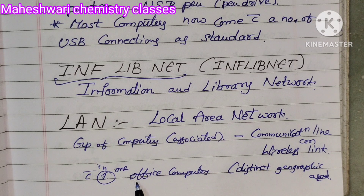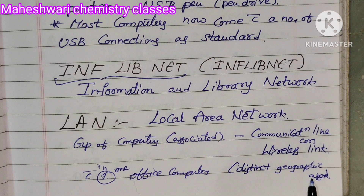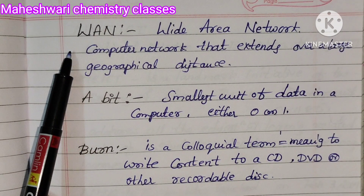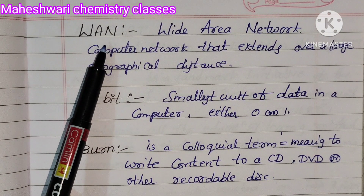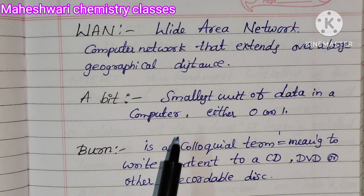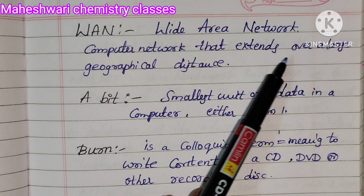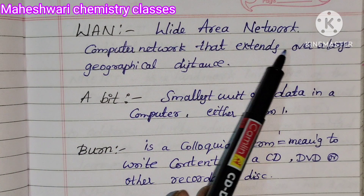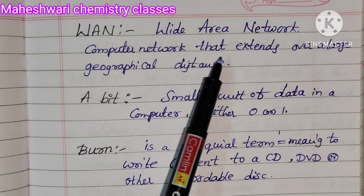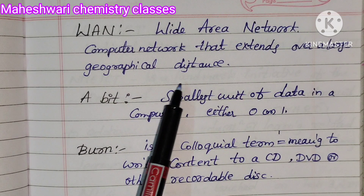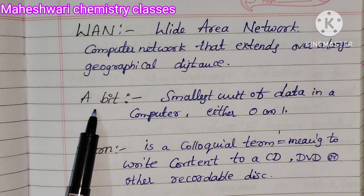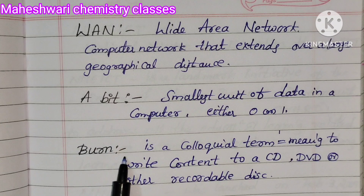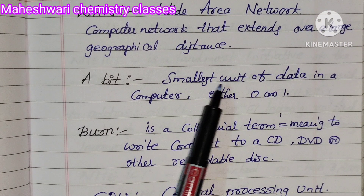WAN — Wide Area Network — is a computer network that extends over a large geographical distance.